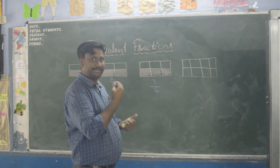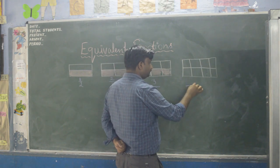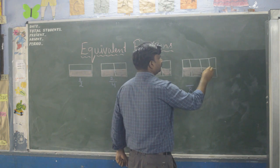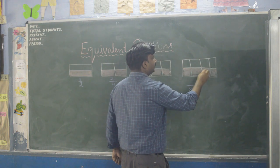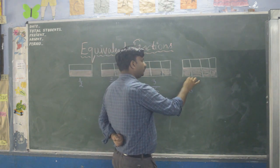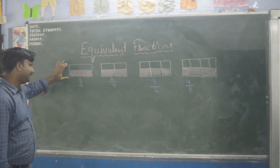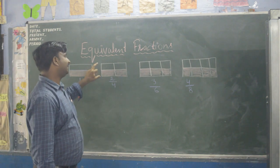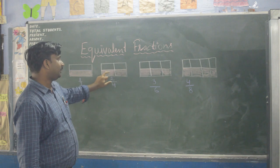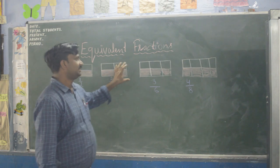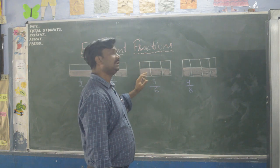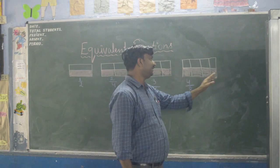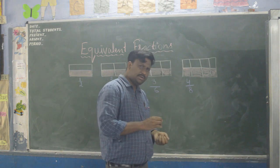Now I have divided the same rectangle into eight parts and I will shade four parts. So the fraction will be four upon eight. So: I divided the rectangle in two parts, shaded part is one — one upon two. Four equal parts, shaded two — two upon four. Six parts, shaded three — three upon six. Eight parts, shaded four — four upon eight.